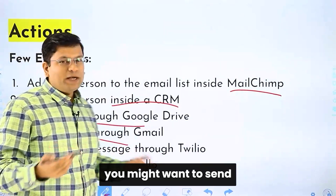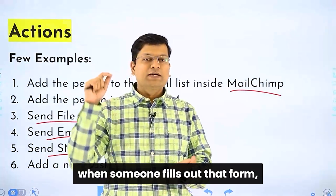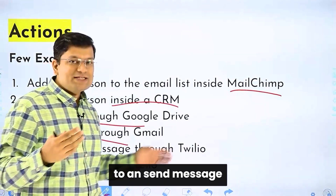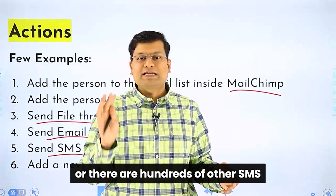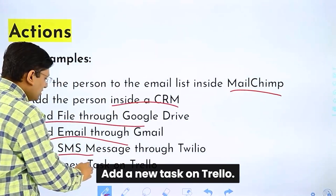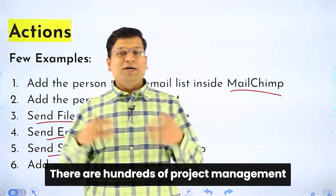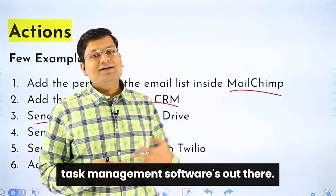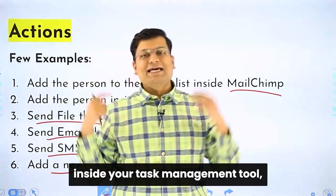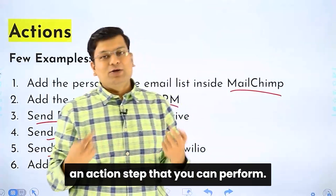Another action is: send an SMS message. You might want to send a confirmation of purchase or a confirmation when someone fills out a form. That confirmation can be sent through an SMS service like Twilio — there are hundreds of SMS sending services. This is an action step. Lastly: add a new task on Trello. There are hundreds of project management and task management software tools. If something happens, you can add a task inside your project management tool — that is also an action step you can perform.